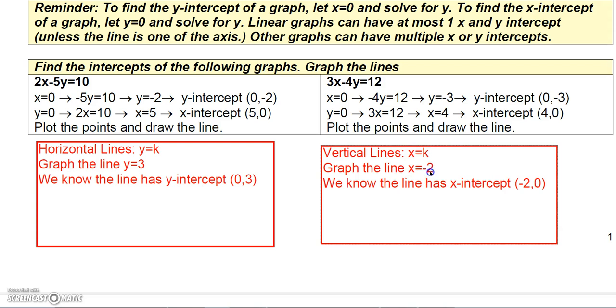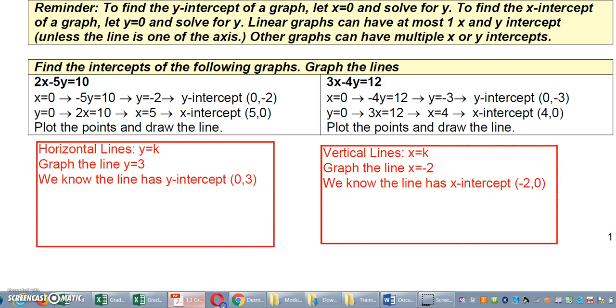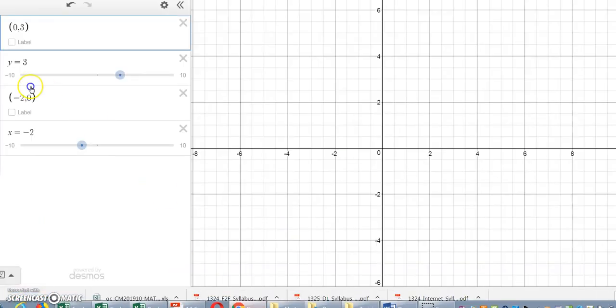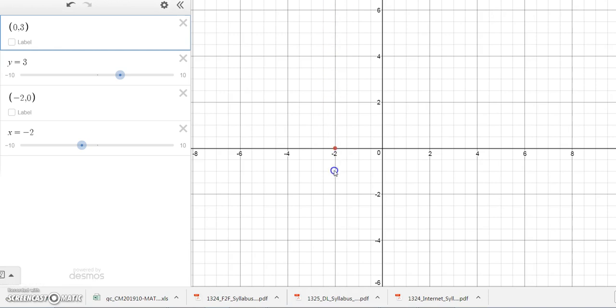...well we know the x value is negative 2 regardless of the y value. So when the y value is 0 we know the x value must be negative 2. So that way gives me the x-intercept and so I can plot the x-intercept here at negative 2, and now since I know it's a vertical line I know the line must go through the point negative 2 in a vertical fashion so therefore the line would look something like this. And so that's how you graph vertical and horizontal lines.